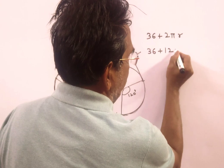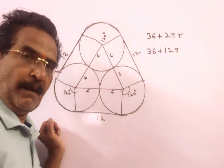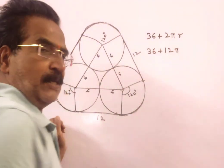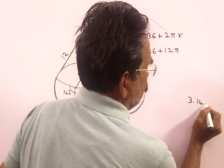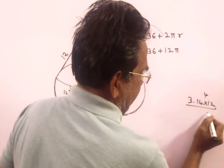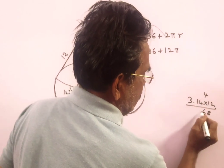So to success, 12 pi, 12 pi. 36 plus 12 pi or pi is equal to 3.14, 3.14 into 12, 12, 4, 48, 12 plus 12 plus 4, 16.